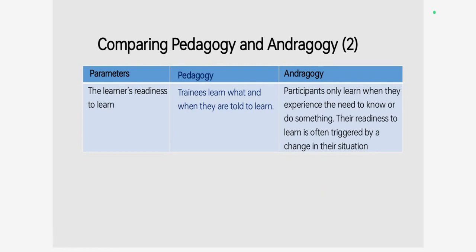Regarding learners' readiness, in pedagogy, trainees learn what and when they are told to learn — they are directed by the teachers. But in andragogy, participants only learn when they experience a need to know or do something. Their readiness to learn is triggered by a change in their life situation. All these are based on the characteristics of adults and the principles of adult learning, which are very important in order to plan and facilitate adult learning programs.